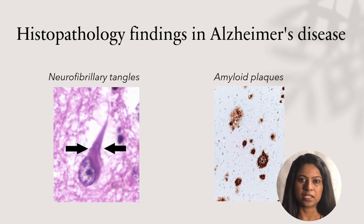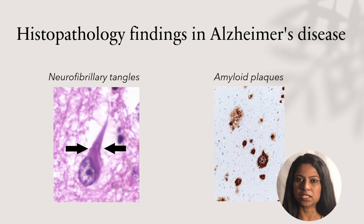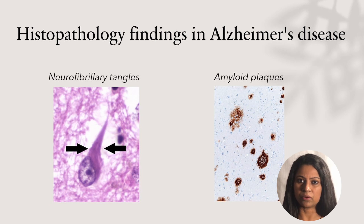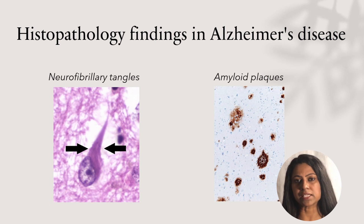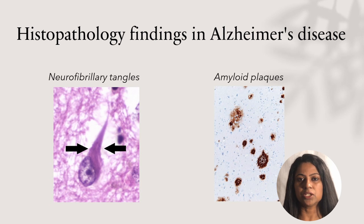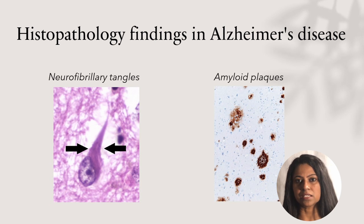On gross examination of the brain, there is cerebral cortical atrophy that affects the hippocampus and the entorhinal cortex, but spares the areas in the primary motor, primary sensory, and the visual cortex. The lateral ventricles appear dilated, the gyri appear narrow, while the sulci widen. The diagnostic features of Alzheimer's disease on histopathological examination are neurofibrillary tangles and amyloid plaques. Neurofibrillary tangles are fibrils of abnormally phosphorylated tau protein. Amyloid plaques consist of beta-pleated sheets of A-beta amyloid deposits.